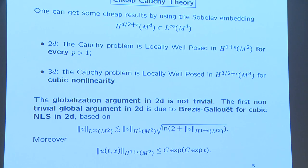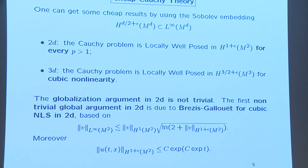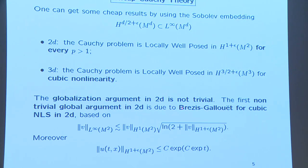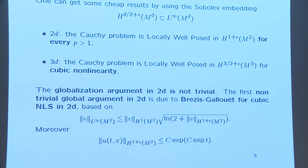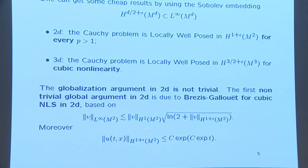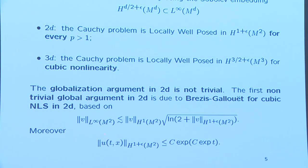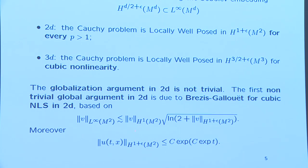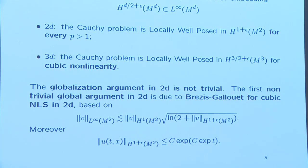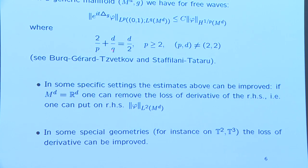I also want to mention the first global existence result for NLS in 2D by Brezis and Gallouët. They globalize in 2D for cubic NLS any solution with initial data in H^{1+epsilon}: you cannot do that just by conservation law, but you add a logarithmic Sobolev embedding — you want to control L^infinity in principle with H^1 but you cannot, so you need to add a high-frequency contribution hidden in the log. This gives globalization and moreover a double-exponential bound: H^{1+epsilon} cannot blow up in finite time.